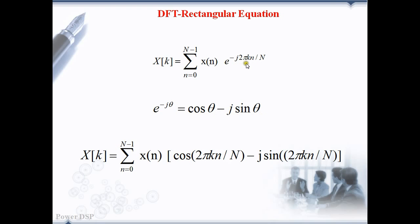So, e power minus j 2 pi k n divided by N is expanded as cos 2 pi k n divided by N minus j sine 2 pi k n divided by N.